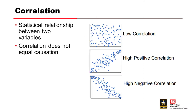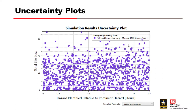Correlation is the statistical relationship between two variables — and correlation does not equal causation. When we look at uncertainty plots, we're looking for any strong positive or negative correlations or trends in the data. For example, if there appears to be no correlation between life loss and hazard ID time, we know that as long as the hazard is identified anywhere between 3 hours before breach and a half hour after breach, life loss will not be significantly impacted for this simulation.